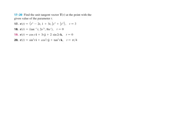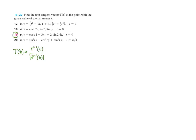I'd like to do an example of finding the unit tangent vector T(t). One of the key words to notice is 'unit tangent vector.' So let's look at problem number 19. To find capital T of t, we're going to find the derivative vector and divide it by its length, because that will produce the tangent vector, and dividing by its length will convert it to a length-1 vector.